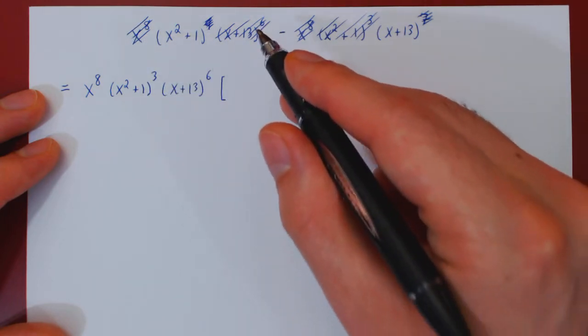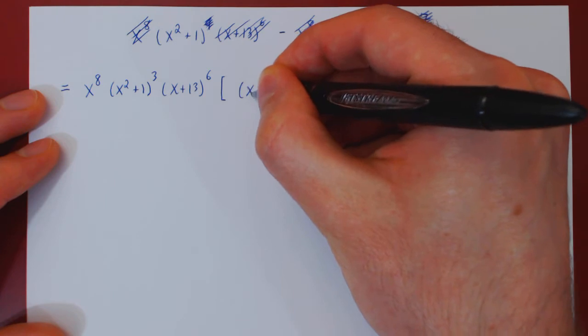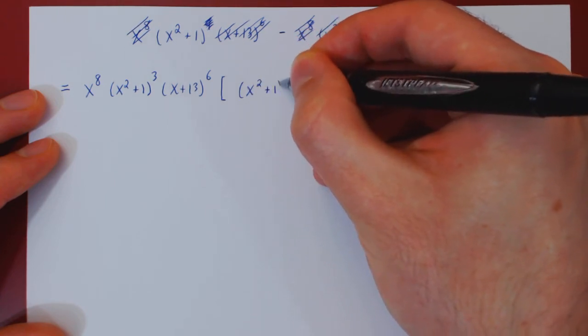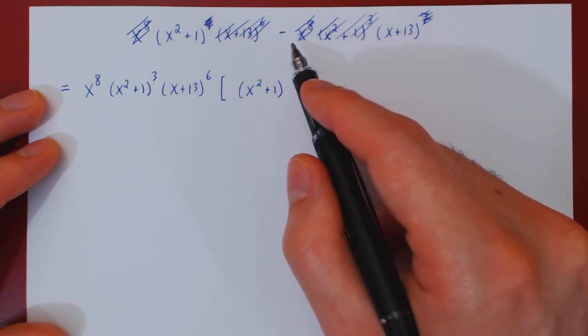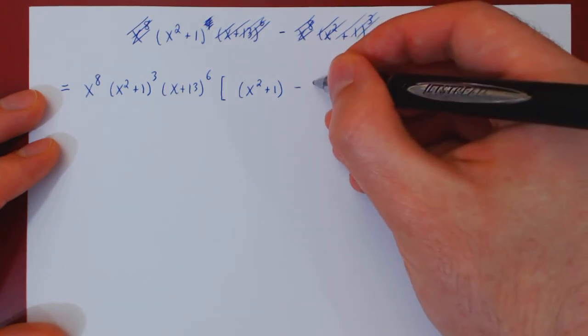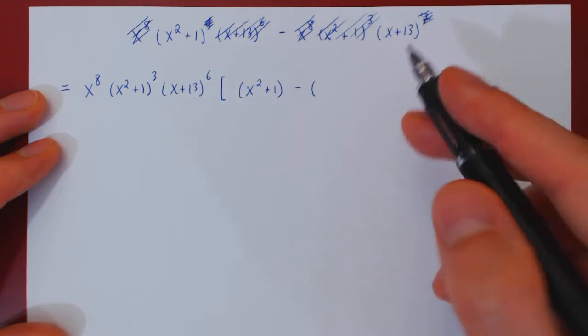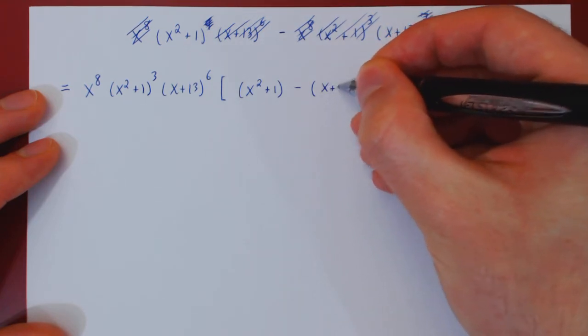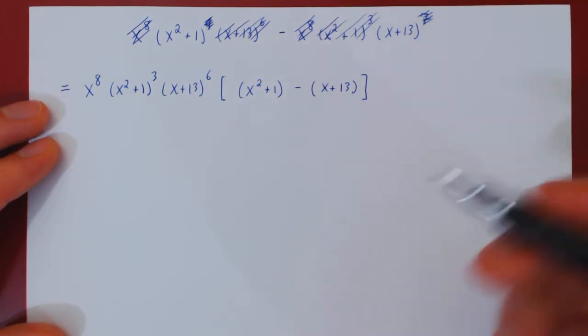So from the first term, all that remains is the x squared plus 1, minus, and here be careful, the negative applies to the entire expression, so you have to open up your brackets, minus, and the only term left over is a single x plus 13. So this completes the first step.